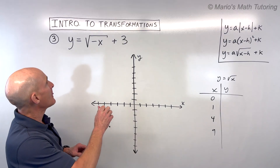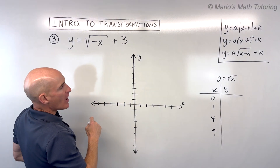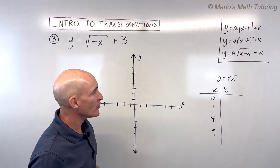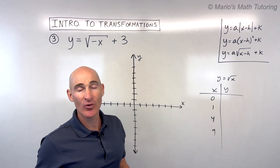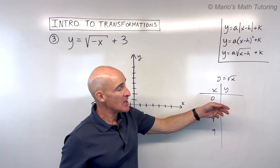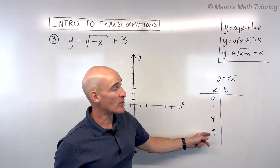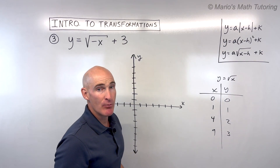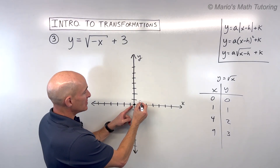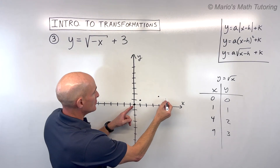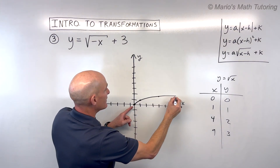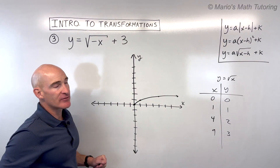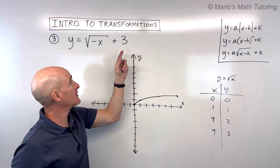Let's do the last example. By covering up the extra quantities, we're left with the parent function y equals square root of x. We can't put in negative numbers, so good values to use are 0, 1, 4, and 9. The square root of those gives 0, 1, 2, 3. The graph looks something like a half parabola on its side. Working from left to right, we have a negative grouped with the x, which makes all the x values opposite — reflecting the graph over the y-axis.